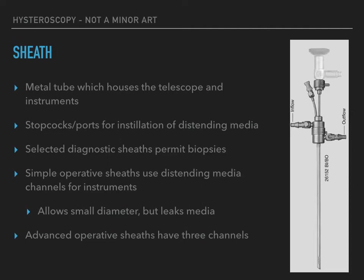The sheath is a metal tube that houses the telescope and instruments. Both diagnostic and operative sheaths are fitted with stopcocks and ports for the installation of distending media. Some operative sheaths have dual ports that provide continuous laminar flow of distending media, which helps to clear blood and thus improves visualization. Some diagnostic hysteroscopes permit targeted biopsies and retrieval of foreign bodies. Simple operative sheaths use the distending media channel for the insertion of instruments, though leaks of media are common. Advanced operative sheaths may have three channels: two for operative instruments and one for instilling distending media. Other operative sheaths contain permanently attached operative tools such as biopsy instruments, forceps, or scissors.